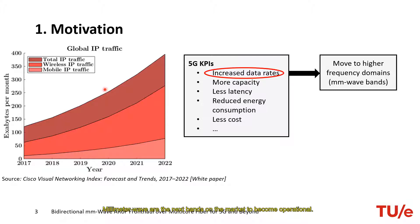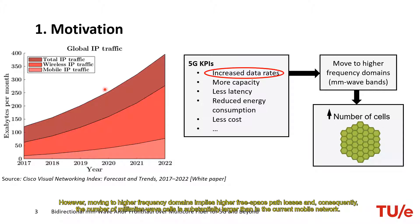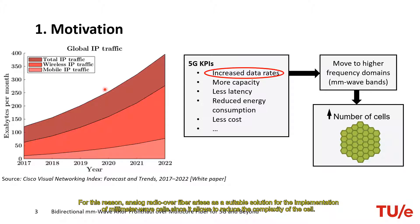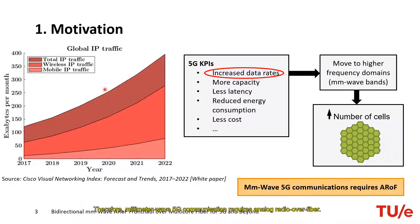However, moving to higher frequency domains implies higher free space path losses and consequently, the number of millimeter wave cells is substantially larger than in the current mobile network. Thus, the complexity of the millimeter wave cells is a crucial factor to perform a scalable and sustainable millimeter wave 5G network. For this reason, analog radio over fiber arises as a suitable solution for the implementation of millimeter wave cells since it allows to reduce the complexity of the cell. Therefore, millimeter wave 5G communication requires analog radio over fiber.